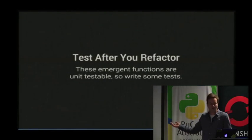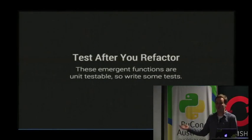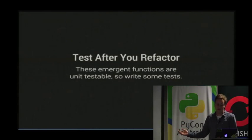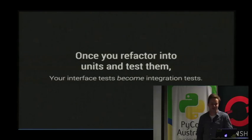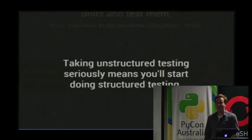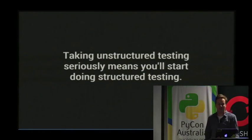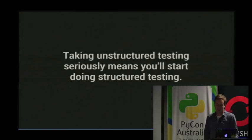Go and write those tests. The emergent functions are effectively the units that structured testing describes. And once you've done that, the tests that you wrote to start off with suddenly become integration tests — sort of like magic. If you take unstructured testing seriously, you will eventually accidentally start doing structured testing, and that will eventually lead to good code coverage.